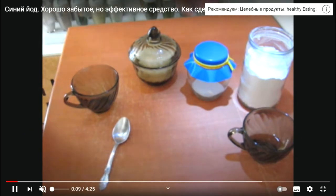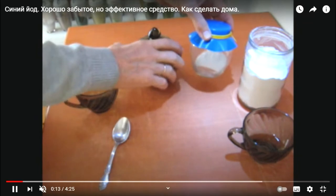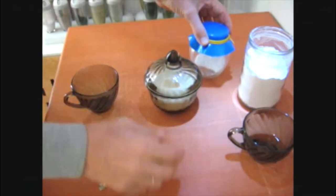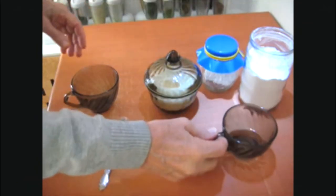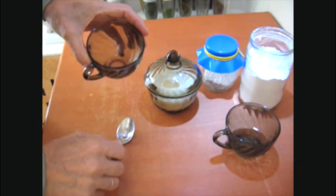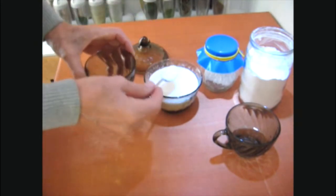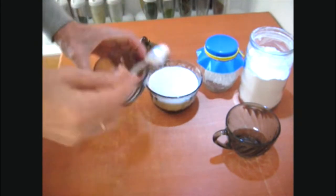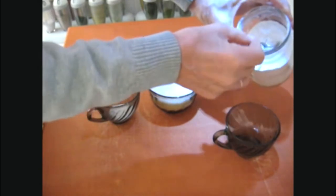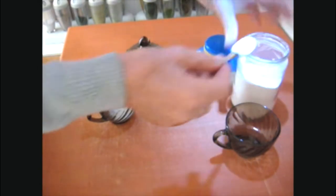Preparation of Blue Iodine Starch: citric acid, sugar, a cup of water, an empty cup where everything will be cooked, sugar, one spoonful of starch, one spoonful of citric acid.